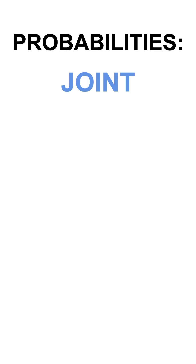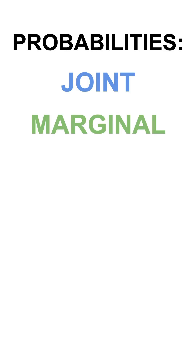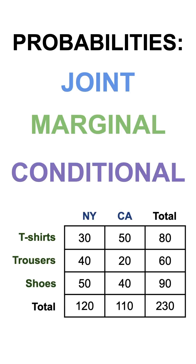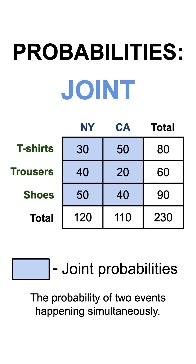What's the difference between the joint, the marginal, and the conditional probability? On one hand, we have the joint probability, which outlines how probable it is for two separate events to occur together, and in this case, it's represented by the probability of selling a piece of clothing and it belonging to either New York or California.